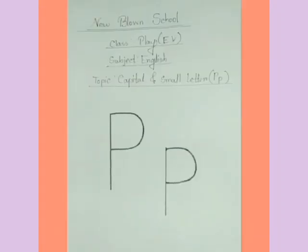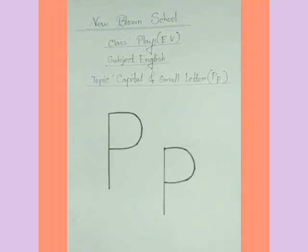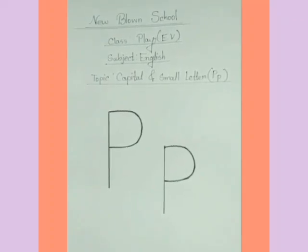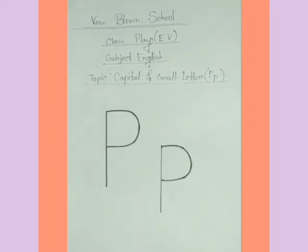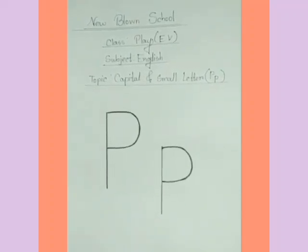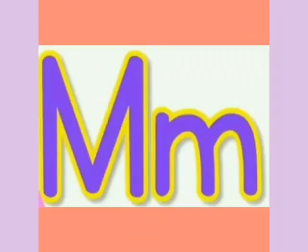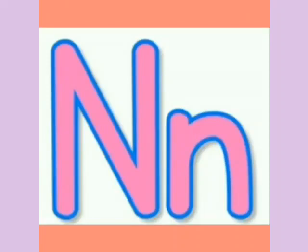At first we will revise our previous class topics and then we will go to our today's class topic. In our previous class we learned some alphabets, and that was capital and small letter M, capital and small letter N, and also capital and small letter O.